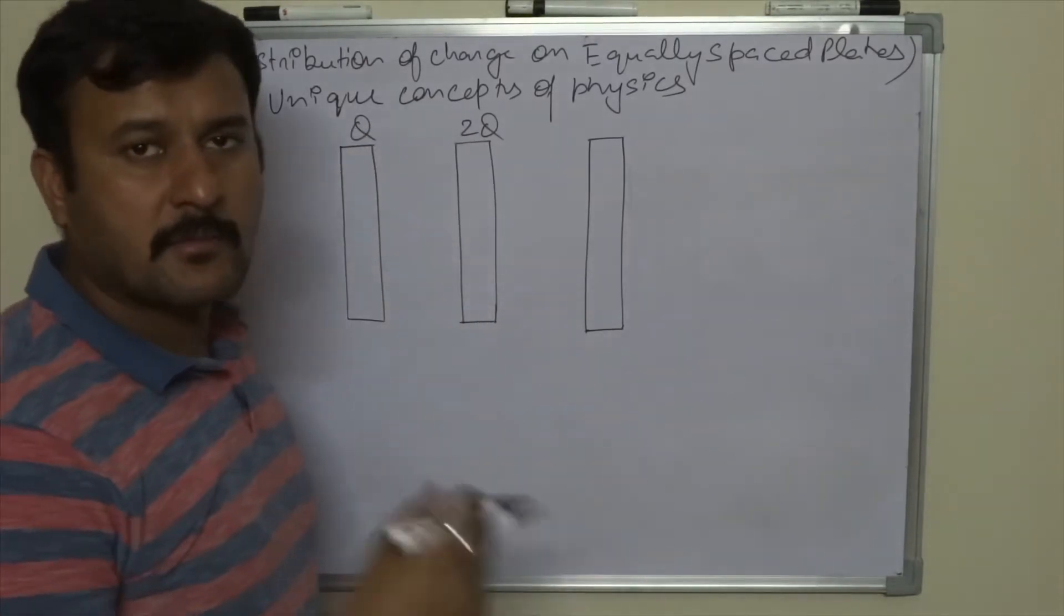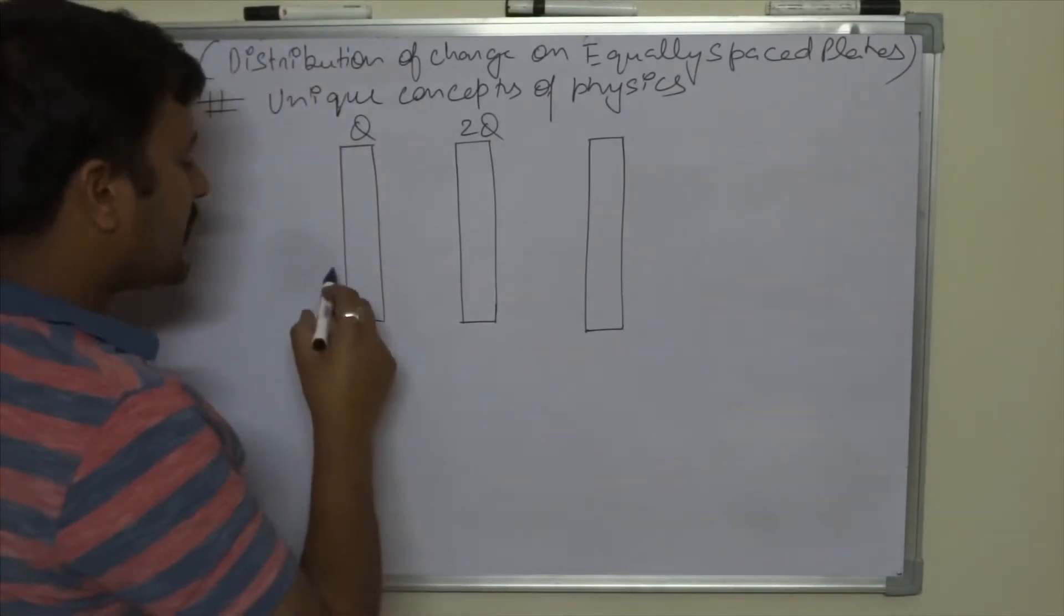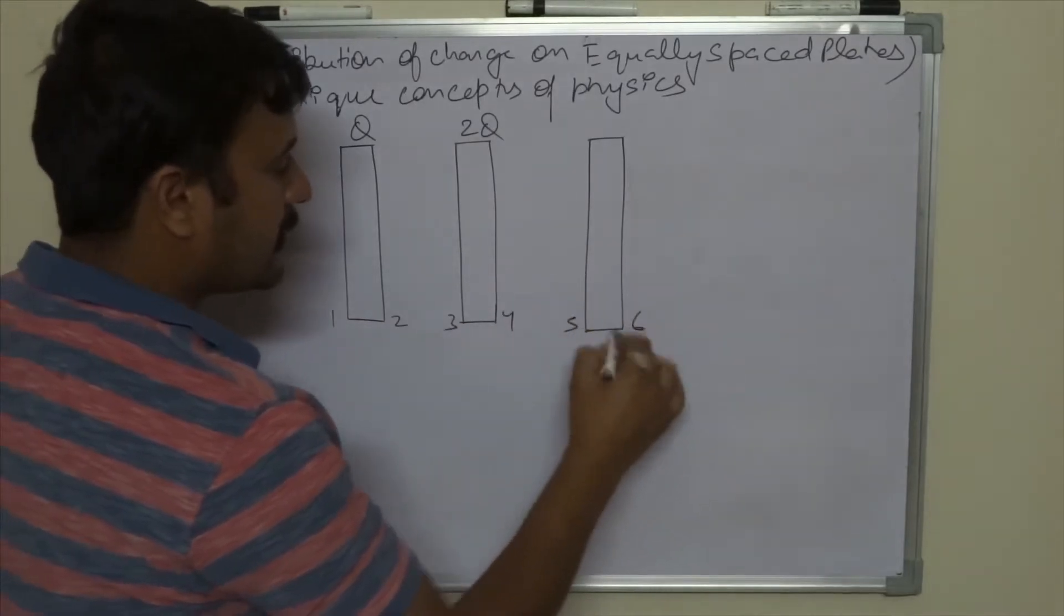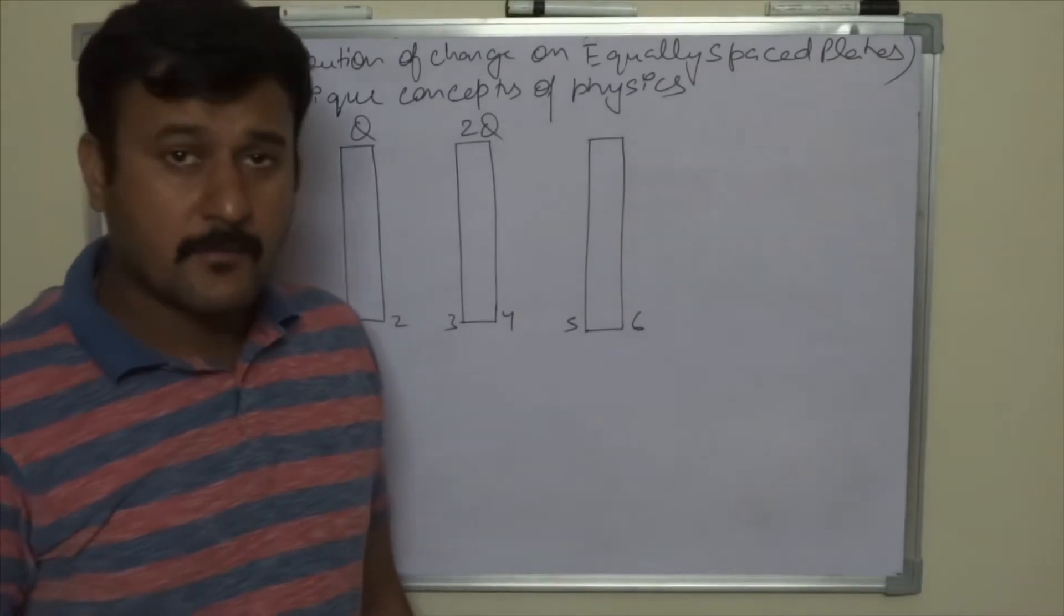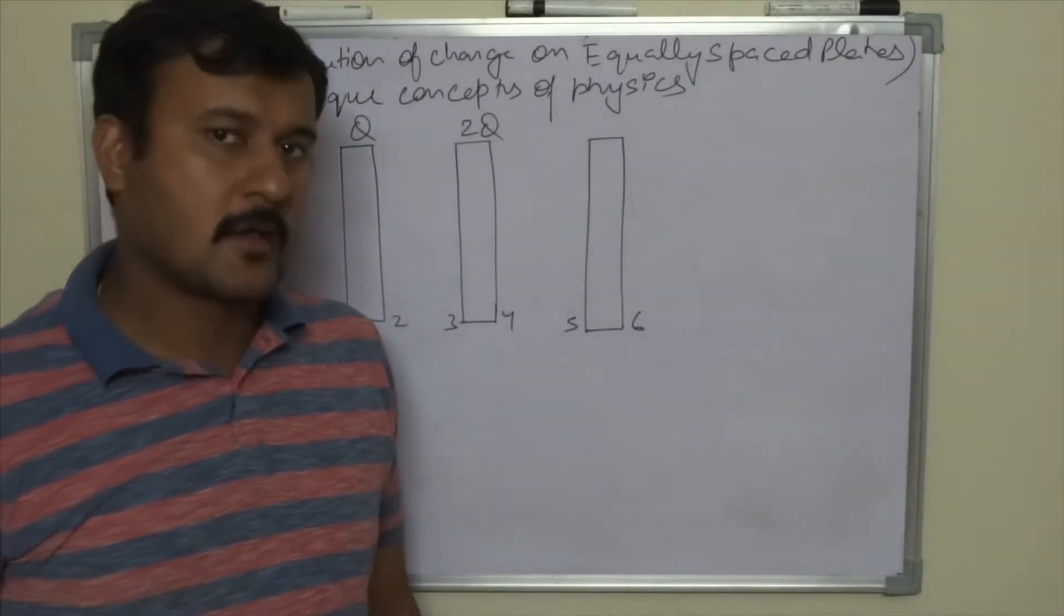And the third plate is neutral. Now we know that there are six surfaces, 1, 2, 3, 4, 5, 6, on which we have to distribute this charge. I am illustrating this problem by trick only.